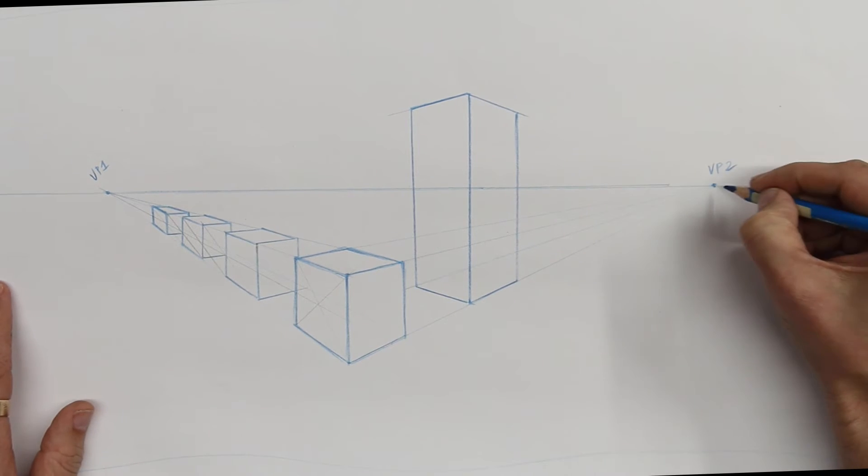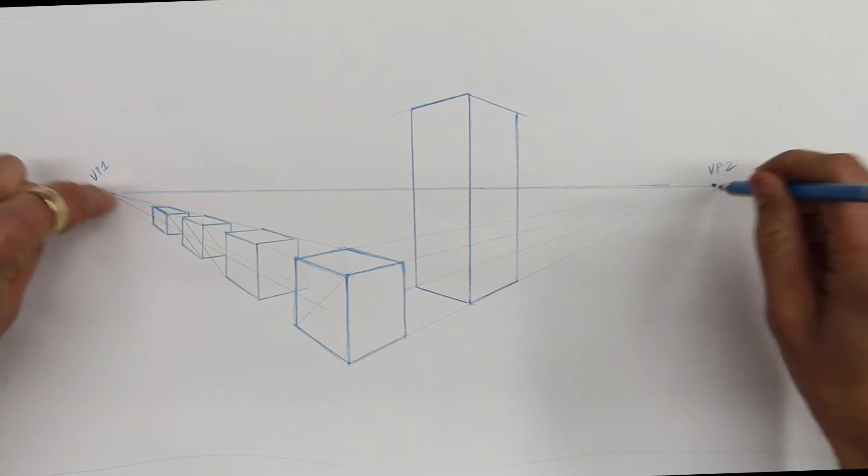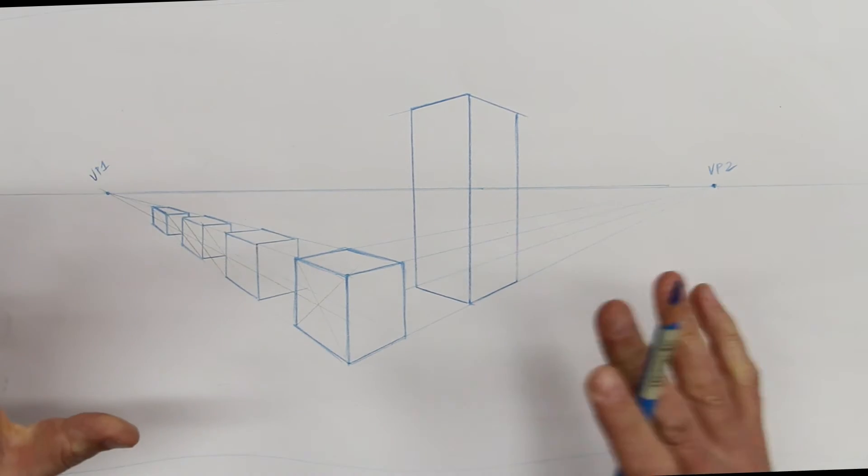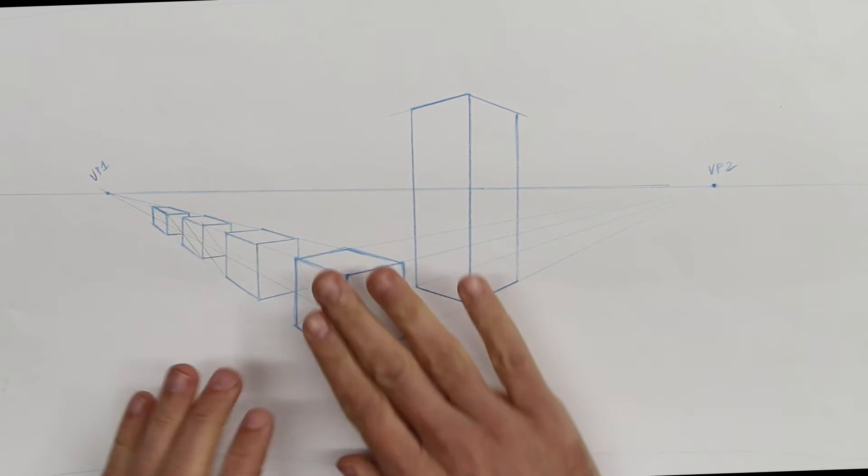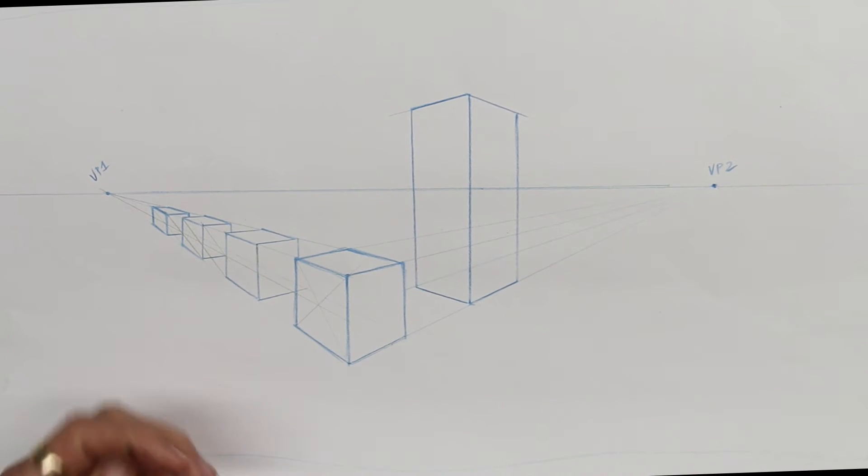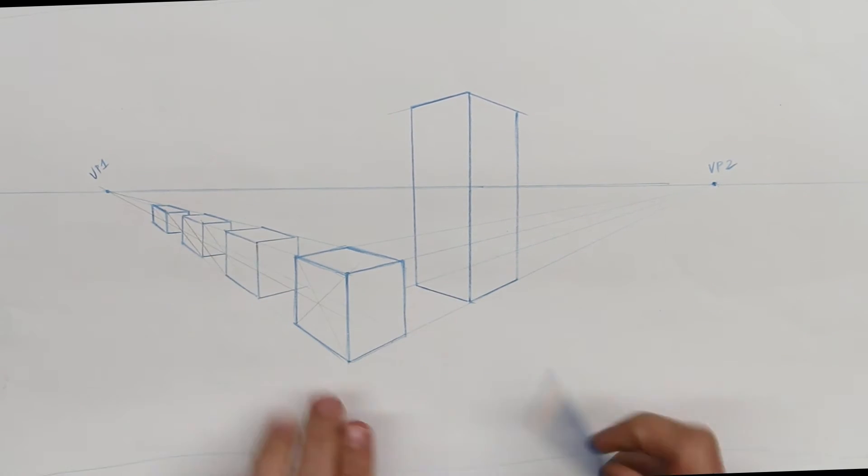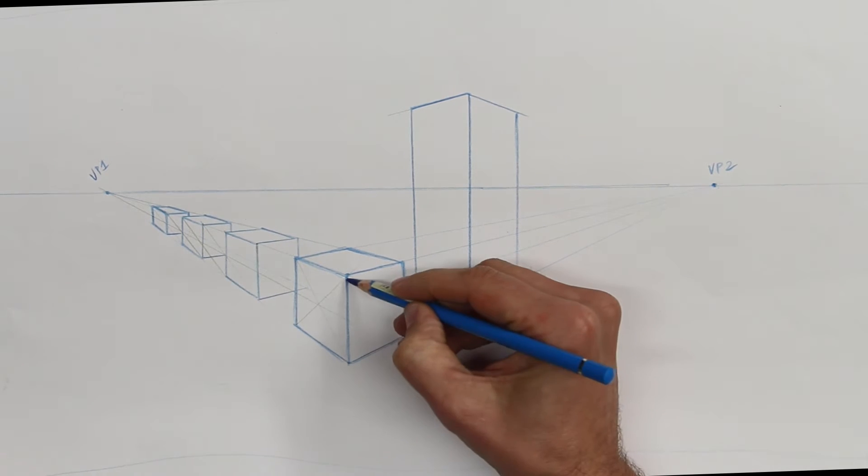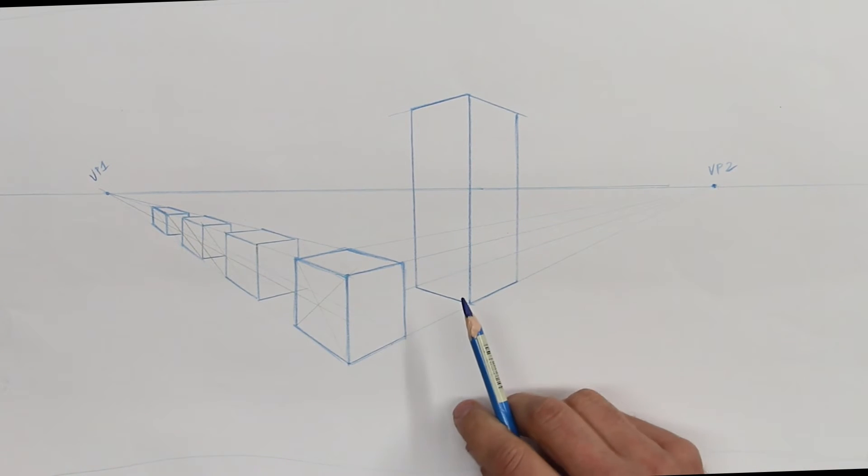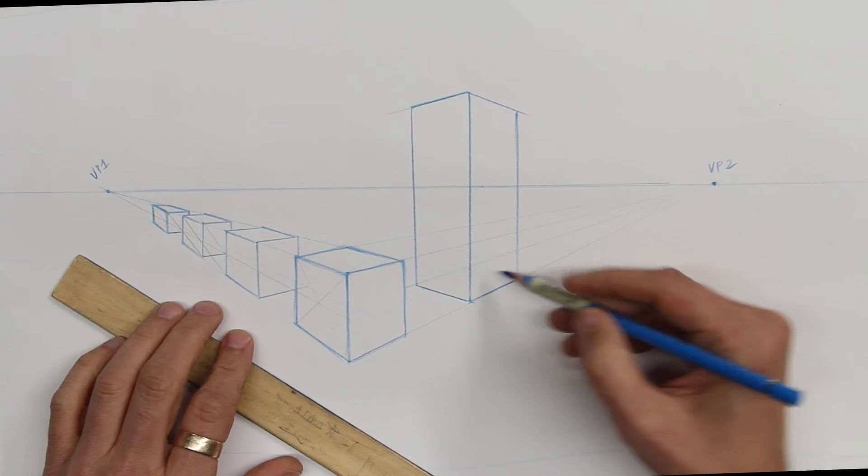Here's something else I really wanted to show you, which is that everything here uses these same two vanishing points because all of these planes are parallel to each other. This is parallel to that. It's parallel to that. It's parallel to this. Turn the other corner. These things are parallel. All of those faces are parallel. As soon as I have something that's tipped to that orientation, I'm going to need a different set of vanishing points.